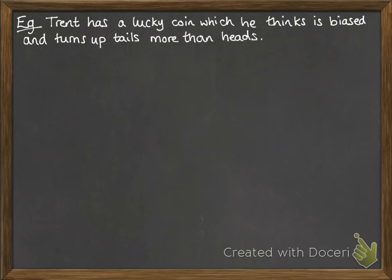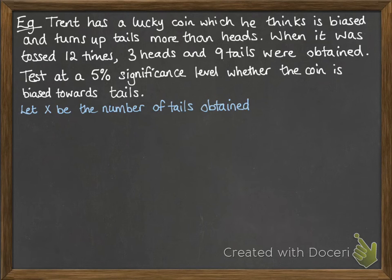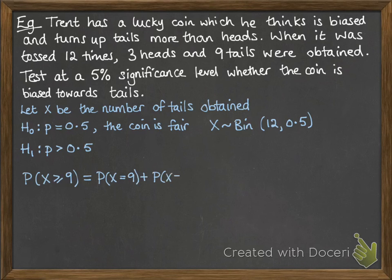Let's look at another example. Trent has a lucky coin which he thinks is biased and turns up tails more than heads. When tossed 12 times, it gave 3 heads and 9 tails. We want to test at a 5% significance level whether the coin is biased towards tails. Let X be the number of tails obtained. The null hypothesis is that p equals 0.5 — the coin is fair. The alternative hypothesis is that the probability of getting a tail is more than one half. Under the null hypothesis, X follows a binomial distribution with 12 trials and probability of success 0.5. Now we test whether the probability of getting 9 tails is significant enough.